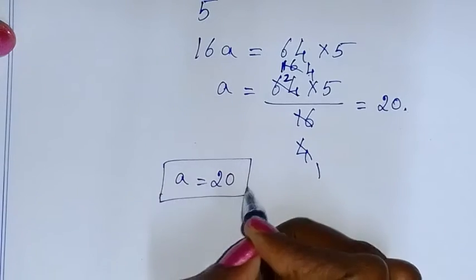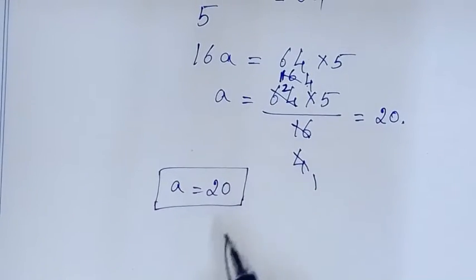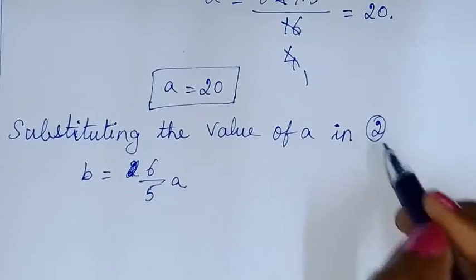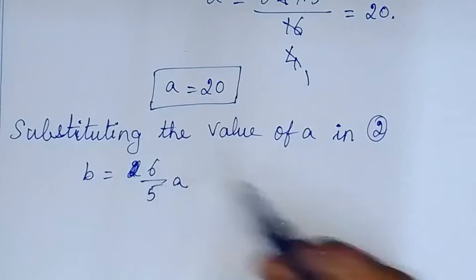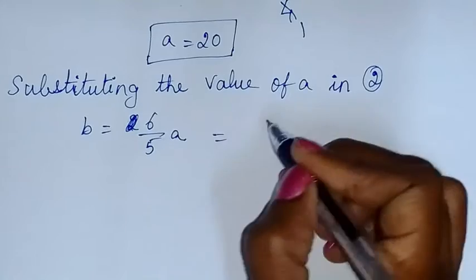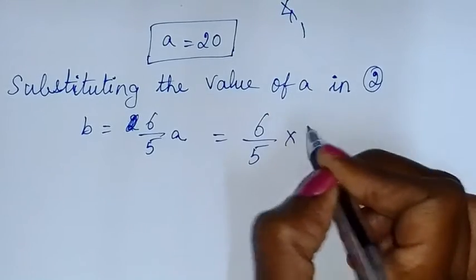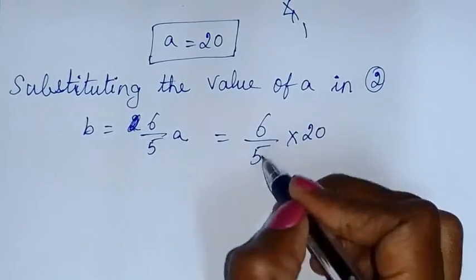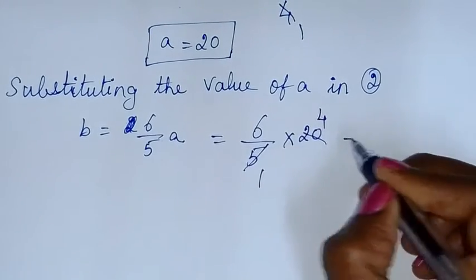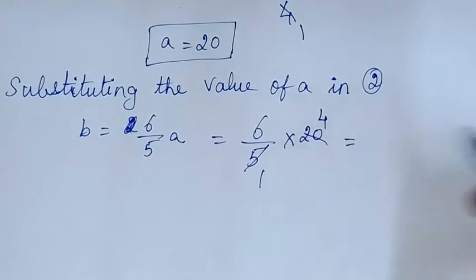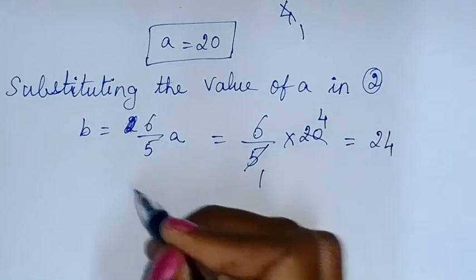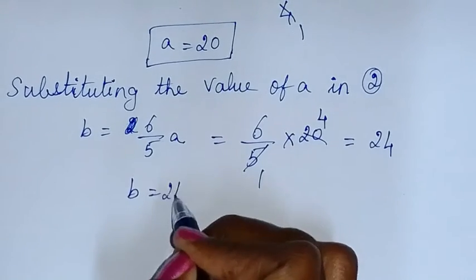Now we substitute A equals 20 into equation 2 to find B. B is equal to 6 by 5 into 20. Simplifying: 5 goes into 20 four times, so B equals 6 times 4, which is 24. So B is equal to 24.